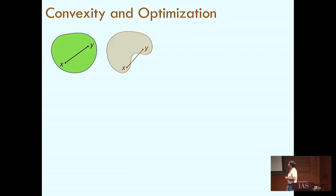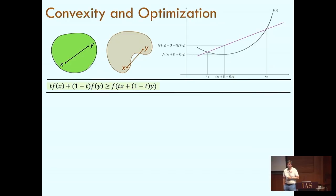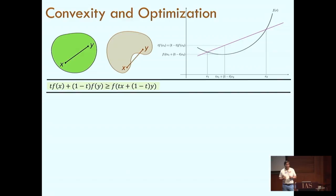Let me first quickly review convexity and convex optimization. A convex set: you take two points, join them by a straight line in Euclidean space, and if the line lies entirely inside the set for every pair of points, this is a convex set. A convex function: you take two points, look at the value of the function at the endpoints, and if the average of these values is at least the value of the function at the average point for all pairs of points connected by the straight line, then the function is convex. This is called the zeroth order definition.